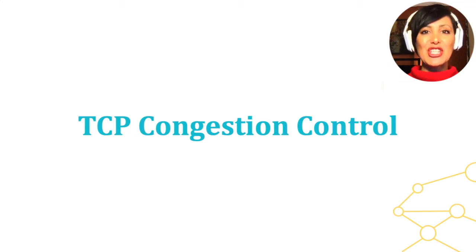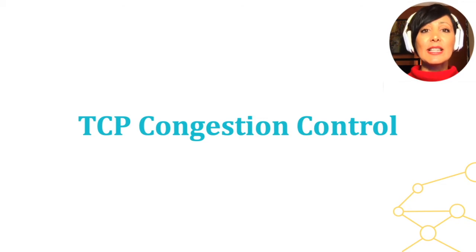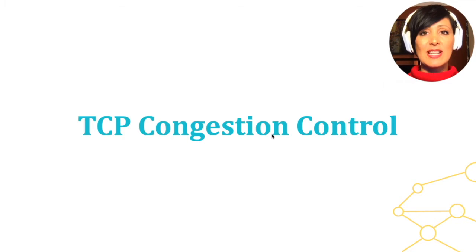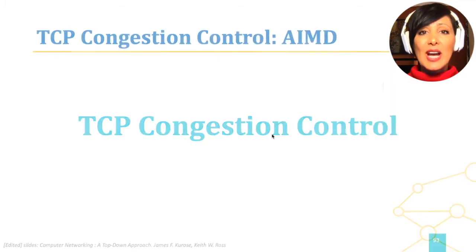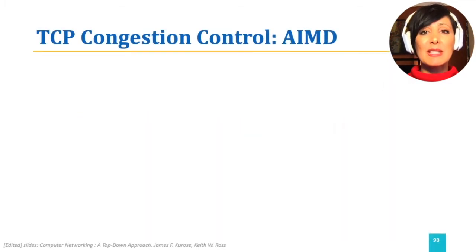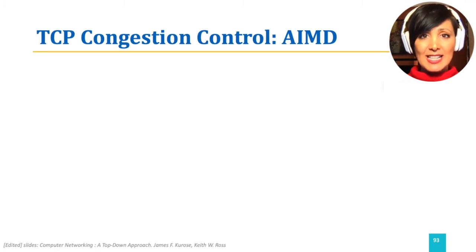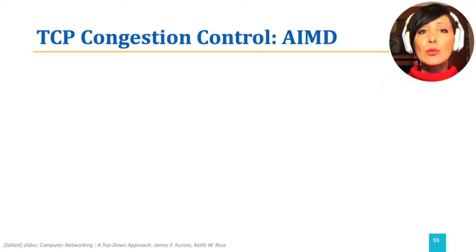Now that we have learned about congestion and the negative effects of it on the network, let's start learning about how TCP performs congestion control. The questions we need to address to understand TCP's congestion control are: how does TCP understand if there is congestion, and how does it react to congestion when it happens?